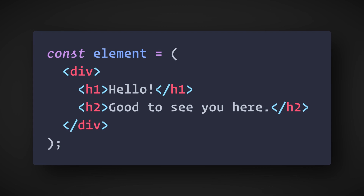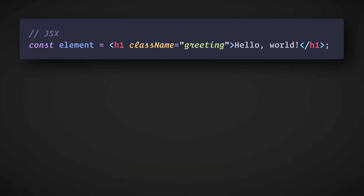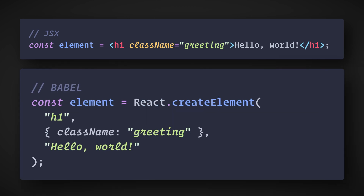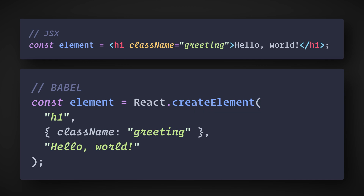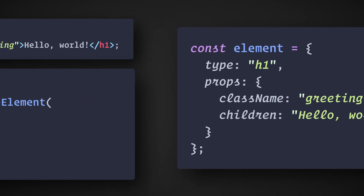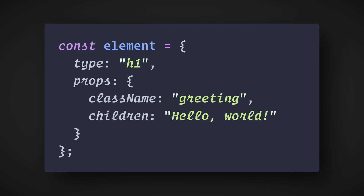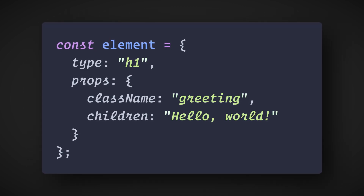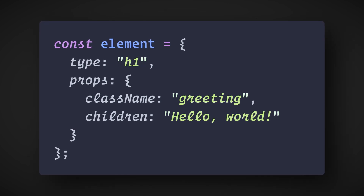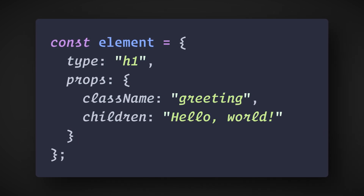JSX compiles into regular JavaScript. Here's an example. During the build phase, Babel compiles JSX down to React.createElement calls. These two examples are identical — take a second to compare these. The end result is that React.createElement creates an object. These objects are called React Elements. You can think of them as descriptions of what you want to see on the screen. React reads these objects and uses them to construct the DOM and keep it up to date.